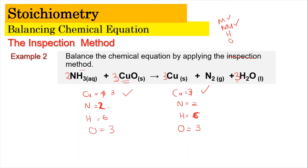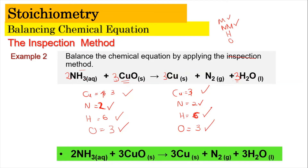So the final check: copper — three on the left-hand side and three on the right-hand side, correct. Nitrogen — two N2 on the product side and 2×N in the reactant, correct. Hydrogen — 2×H3 gives six; 3×H2 gives six, correct. Oxygen — 3 oxygen on one side and 3 on the other, correct. This is how you balance the equation inspectively, going through metal, non-metal, hydrogen, and oxygen one by one.